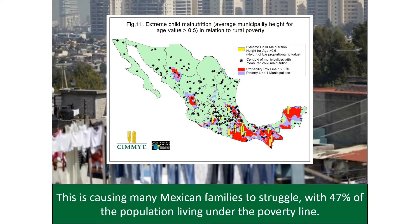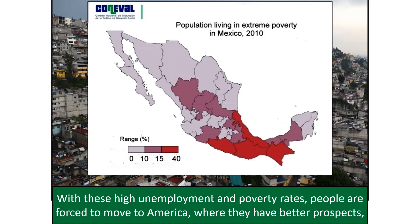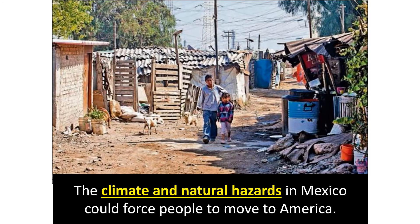This is causing many Mexican families to struggle, with 47% of the population living under the poverty line. Southern Mexico has the highest poverty, so people from southern Mexican states move north into northern Mexico and into the United States in hopes of a better life. With high unemployment and poverty rates, people are forced to move to the US where they have better prospects.